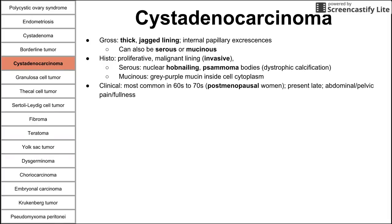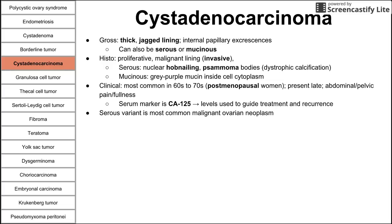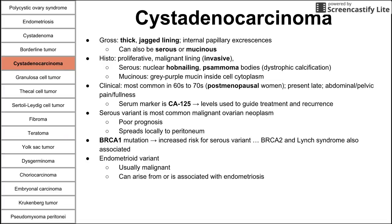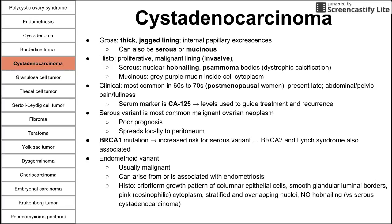Clinically, these patients are older — usually postmenopausal women in their 60s to 70s. They present late with abdominal and pelvic pain and fullness. The serum marker is CA-125, used to guide treatment and monitor recurrence. The serous variant of cystadenocarcinoma is the most common malignant ovarian neoplasm, with a generally poor prognosis and local spread to the peritoneum. Associated genes include BRCA1 (strongest association with the serous variant), BRCA2, and Lynch syndrome. The endometrioid variant is malignant, associated with endometriosis, and on histology shows cribriform growth of columnar epithelial cells, smooth glandular luminal borders, and stratified overlapping nuclei — without nuclear hobnailing.